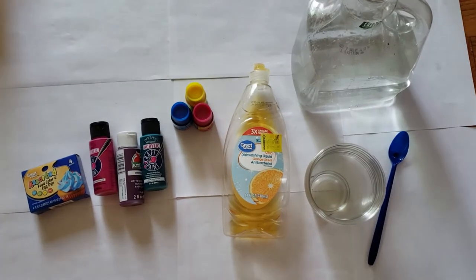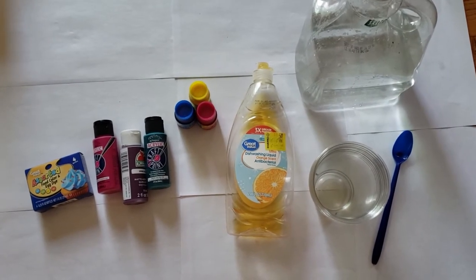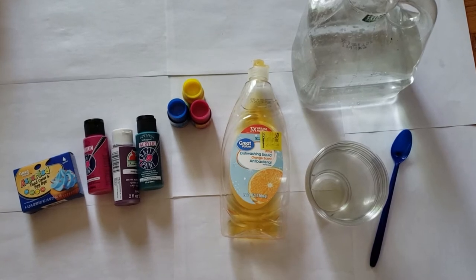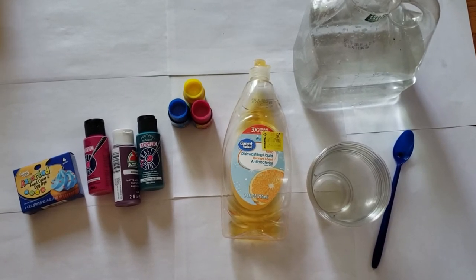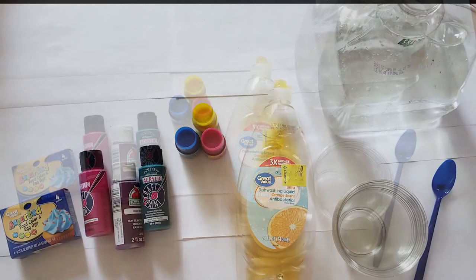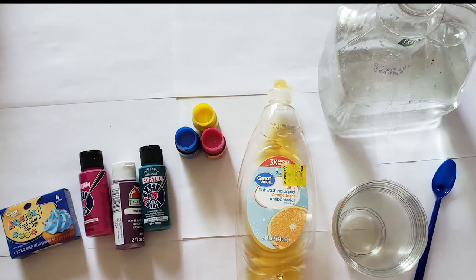Now we have to get our paint ready. So you're going to need some cups to mix your paint in, some water for mixing your paint, some dish soap for making it bubbly, and then you either need some acrylic paint or food coloring or fabric dye, anything that you want for painting with your bubbles.